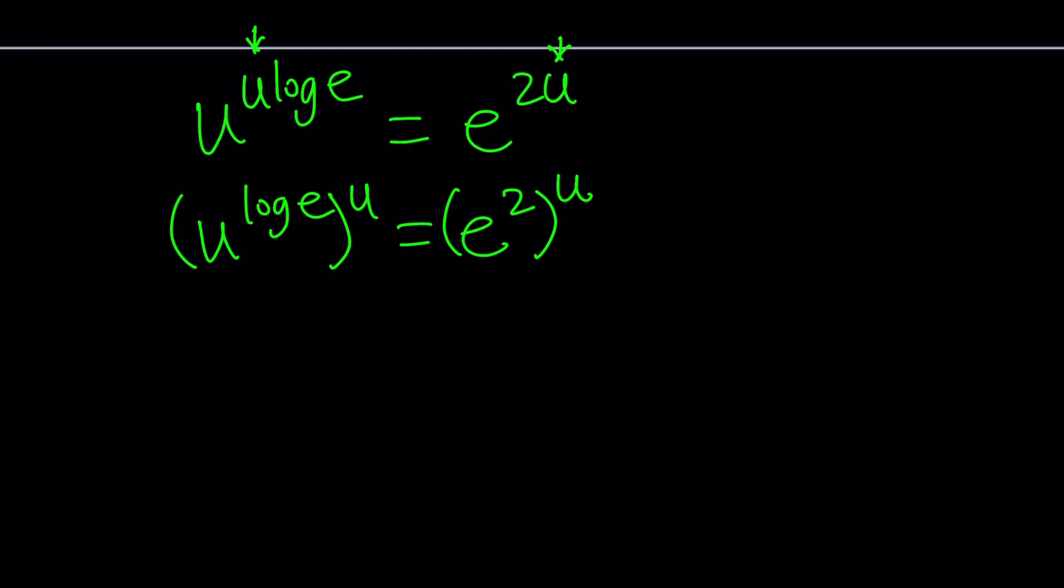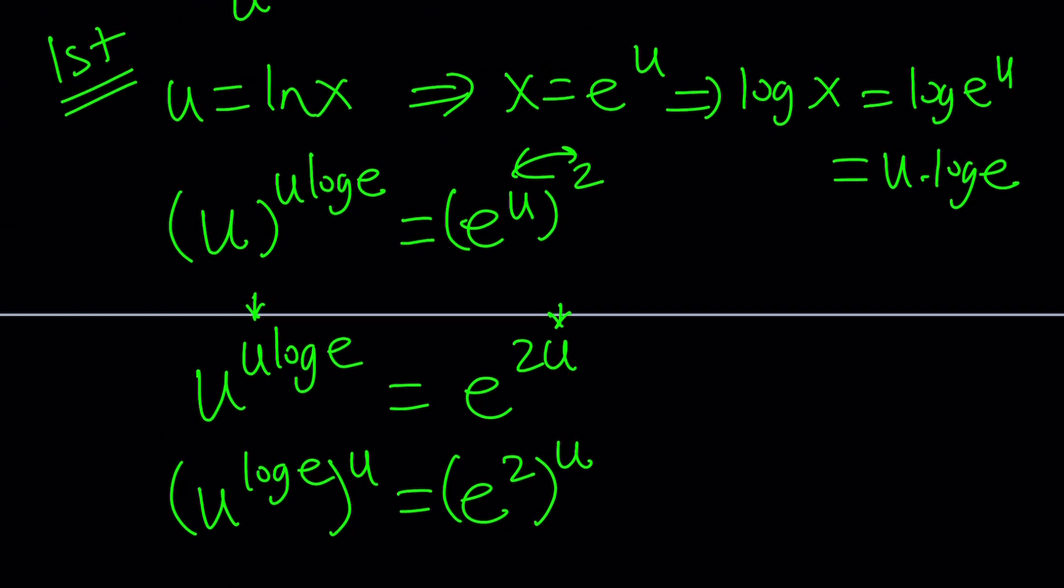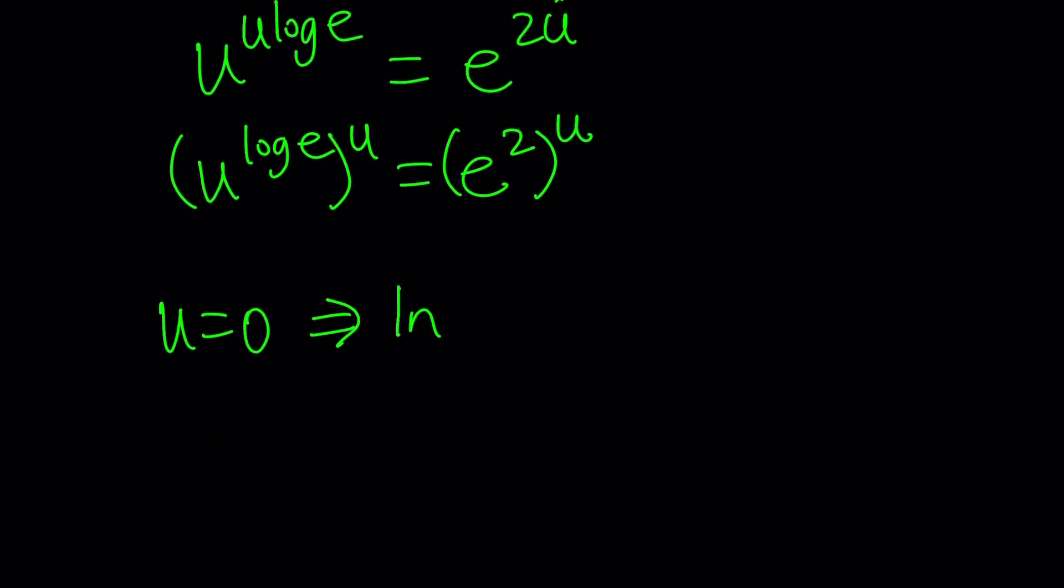It means that if u is equal to 0, then we might have a solution. Because both sides will be raised to the 0 power. And that will give you 1. But what about the left hand side? Don't we have a u at the bottom? I mean at the base, which is going to give us 0 to the power 0, which should also be 1, right? For many people, I think. Anyway, so u equals 0 seems to be a solution. But u equals 0 implies that ln x is equal to 0, which means x is equal to 1.